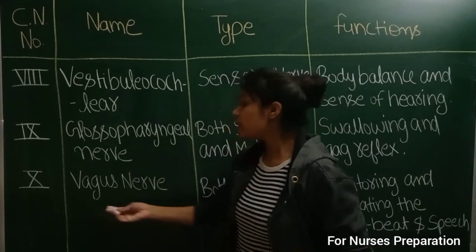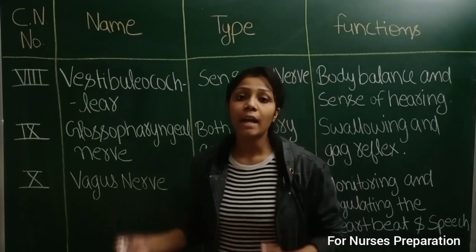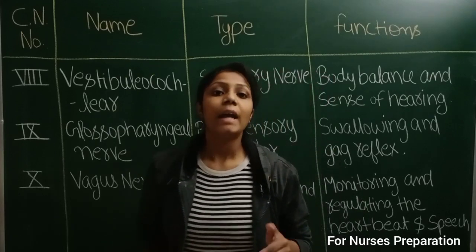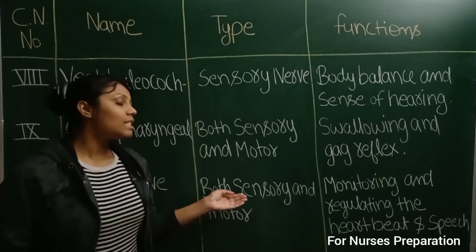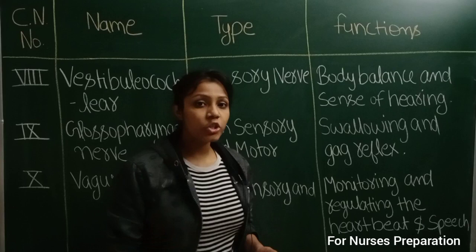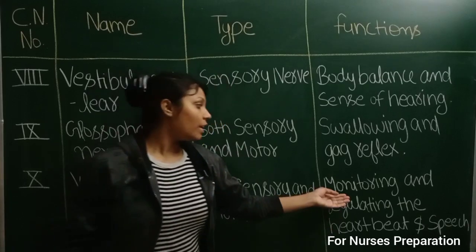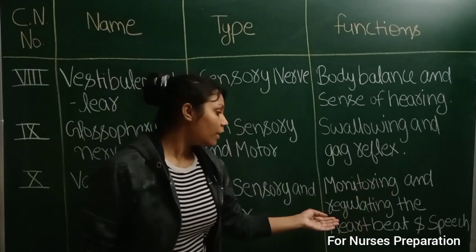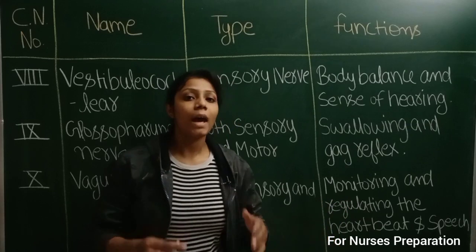Vagus nerve which is tenth cranial nerve is both sensory and motor in their type. And their functions are monitoring and regulating the heartbeat and speech.